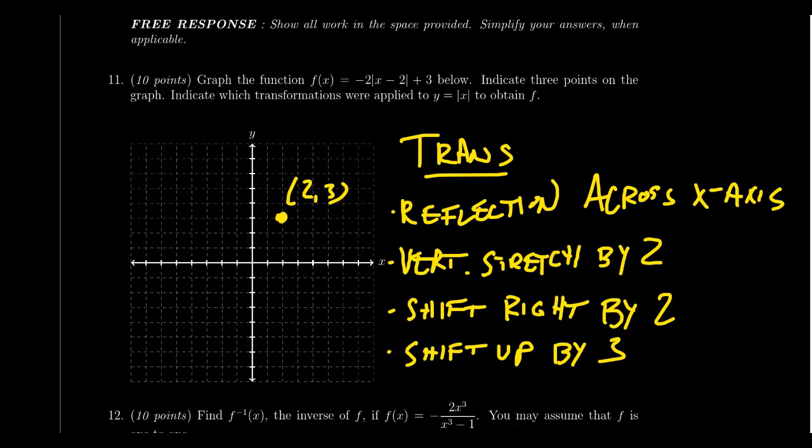So another point to pay attention to is what happens to the original point (1,1). Well, when you reflect it across the x-axis, that's going to go to the point (1,-1). And then when you stretch it, that'll go to (1,-2). Then we have to do some shifting. We're going to shift 2 to the right and then 3 up. So 1, 2, 3.